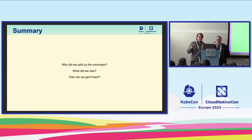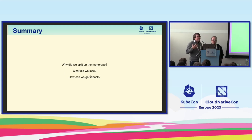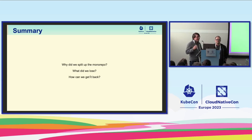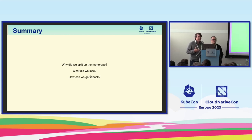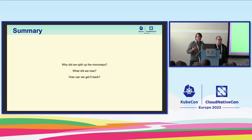This is what we're going to be covering today. Broadly, why did we split up the monorepo? Why did we go from one big Git repository source of truth into the many repositories that we have today? When we did that, did we lose things, or was it all just upside? And spoiler, the things that we did lose — how can we get those things back?